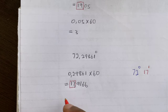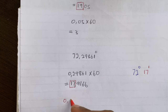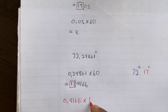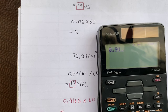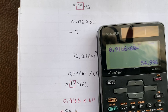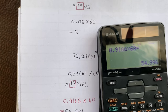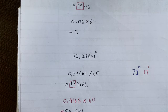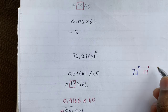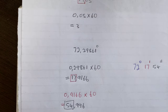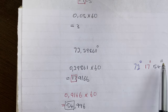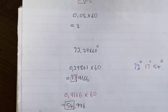Then take the decimal part 0.9166 and multiply by 60. The answer will be your seconds. So 0.9166 times 60 equals 54.996. Taking this number, your final answer is 72 degrees, 17 minutes, 54 seconds. Go ahead and use your calculator to double-check by punching this number in, just to verify whether your answer is correct.